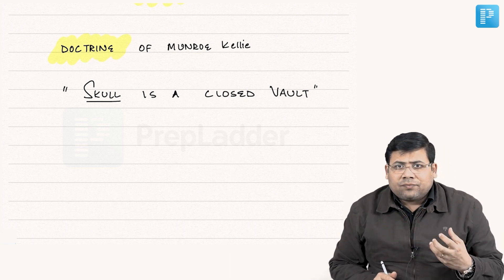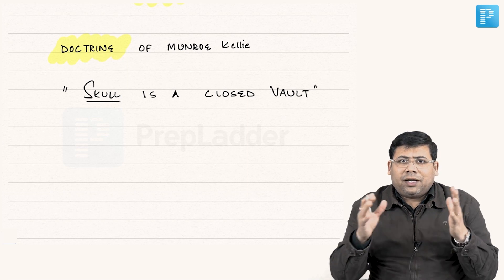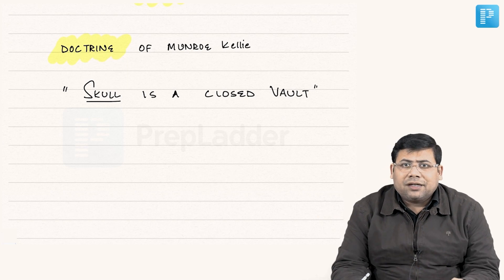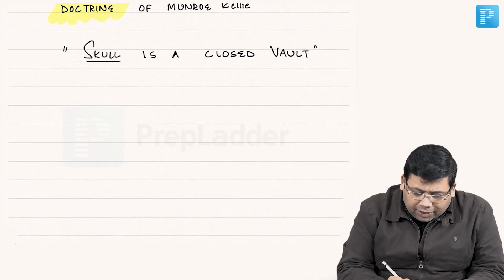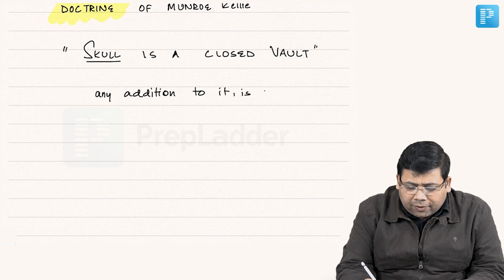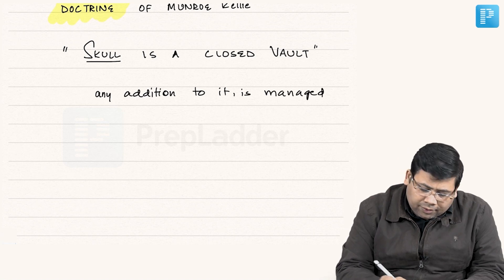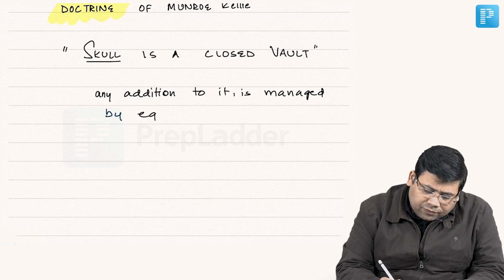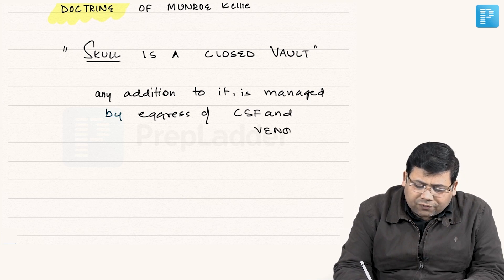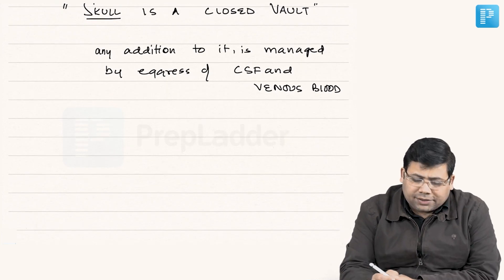Unlike other organs, we do not have a freely expanding space or cavity in the skull. Everything relies on this fact that the skull is a closed vault. Any addition to it is managed by egress of CSF and venous blood. Let us try to understand the importance of this.